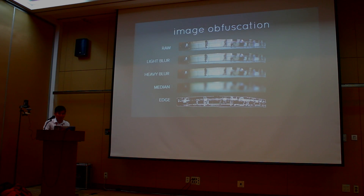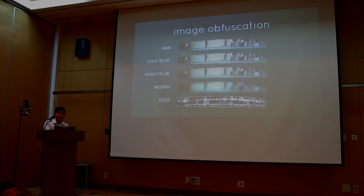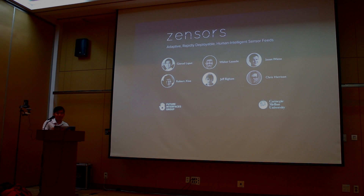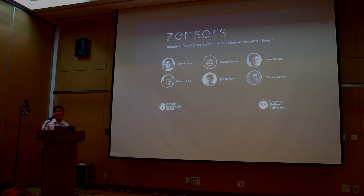We also looked at image obfuscation as a way to protect privacy. The biggest implication is that the more you degrade the image, the less reliable the crowd becomes, and thus much harder for machine learning to hand off. Please refer to our paper for more details, and thank you all for your attention. I now open the floor for questions.